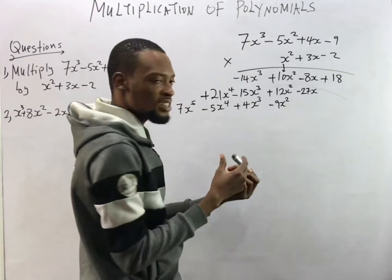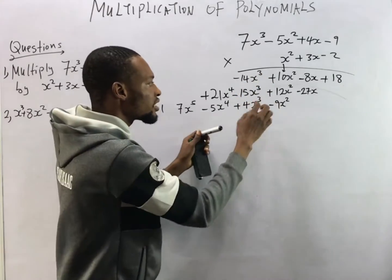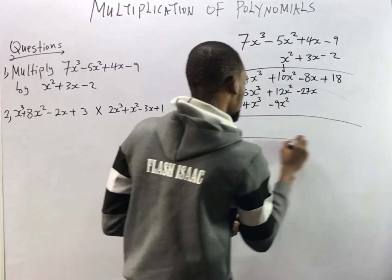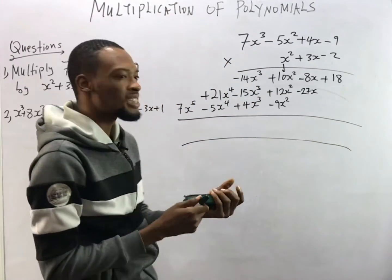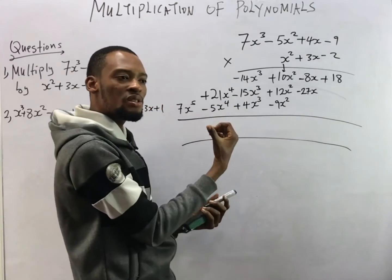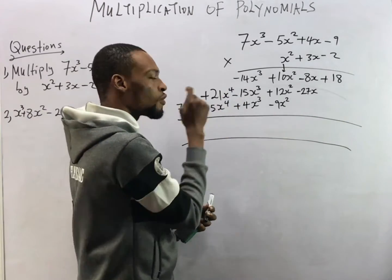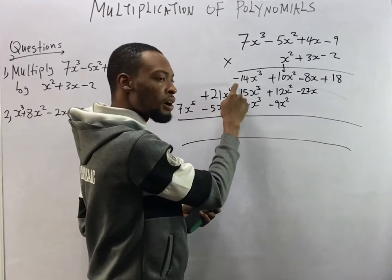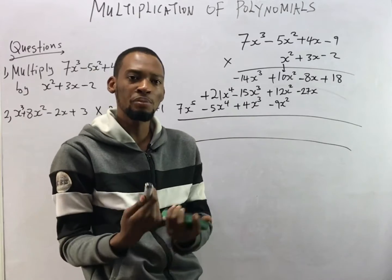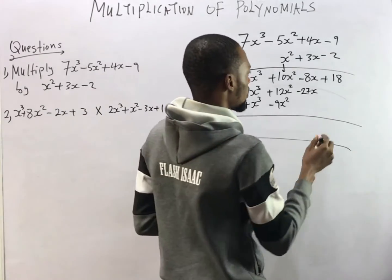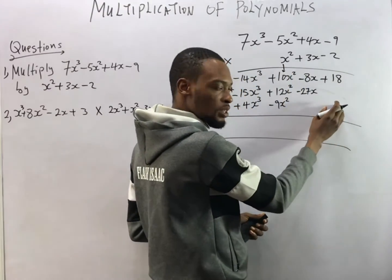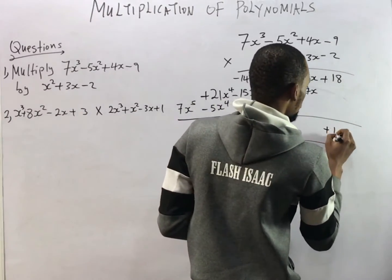Now we add all these values. When adding polynomials, we add values with the same power of variables. For example, s⁴ can only be added to another s⁴ term — you cannot add s⁴ to s⁵. So we begin adding. The constant term is simply plus 18.